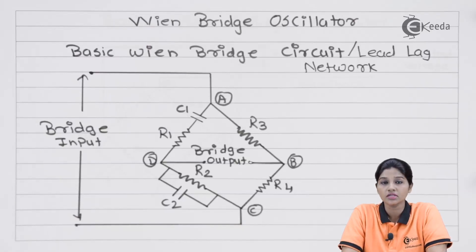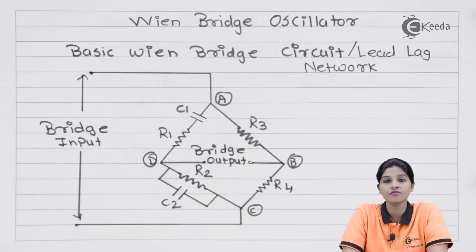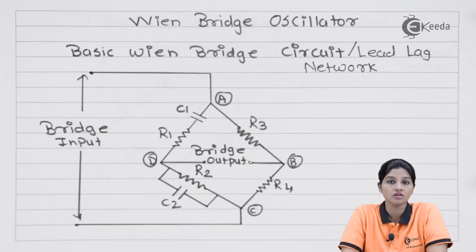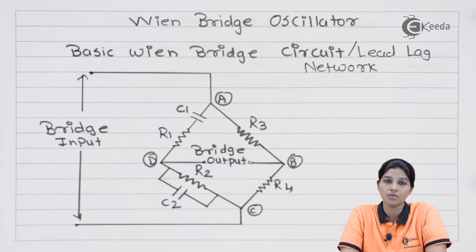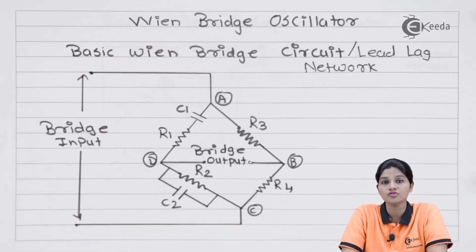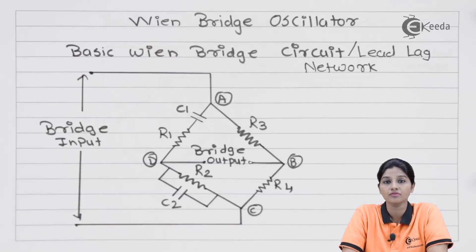So if we use an inverting amplifier, then the amplifier introduces a phase shift of 180 degrees, and therefore to have positive feedback, the feedback network is required to introduce a phase shift of 180 degrees. Basically, the oscillator circuit consists of an amplifier and a feedback network. But if we use a non-inverting amplifier, then the phase shift introduced by the amplifier is zero degrees, and therefore there is no need for the feedback network to introduce an additional phase shift.